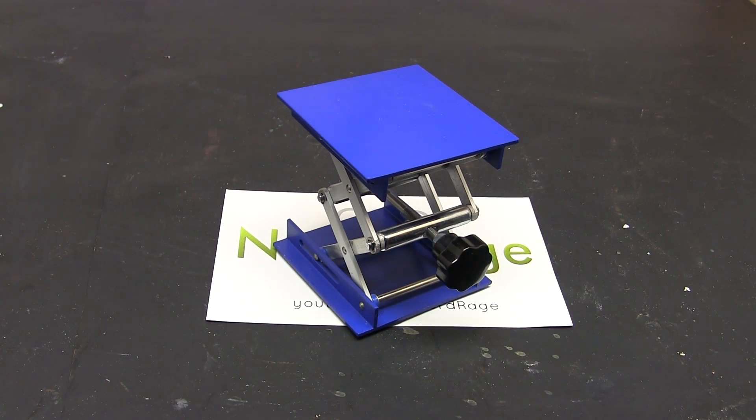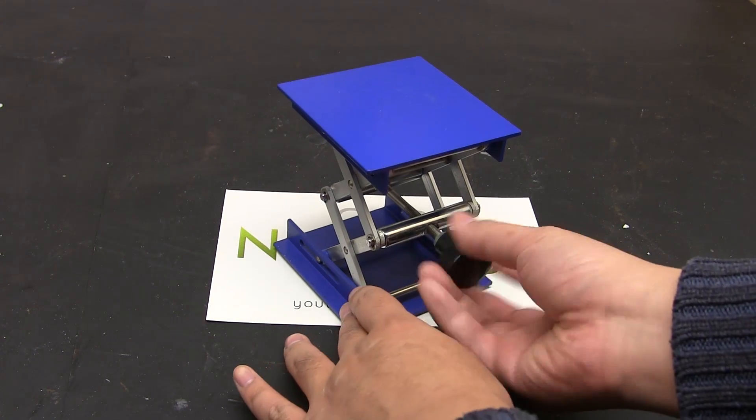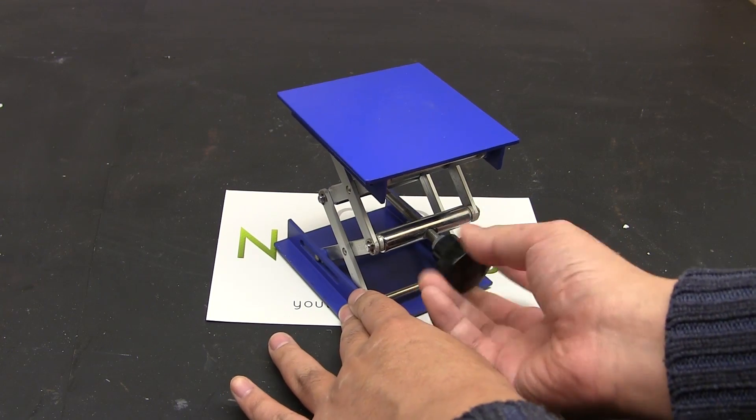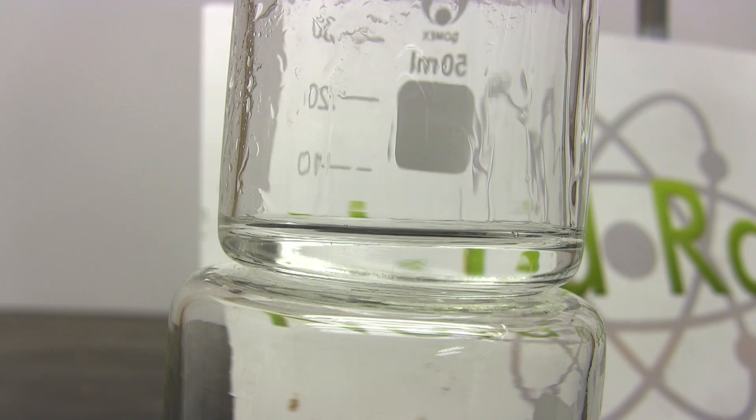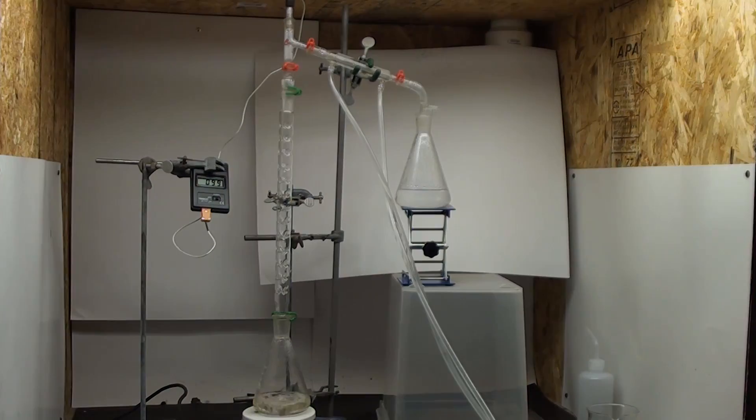A lab jack is one of those annoying things you don't know you need until you need it, and then you forget you need to acquire one when you don't need it. All they do is lift things to various heights. While you can get away with just using anything on hand like other beakers, a lab jack is so convenient and useful that I think it's worth having one or two. I primarily use these for setting the receivers in my distillations.